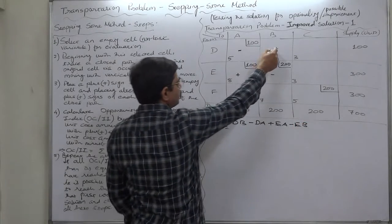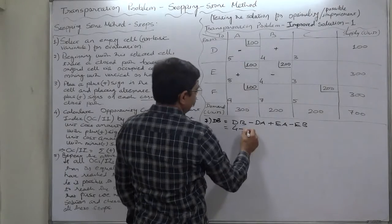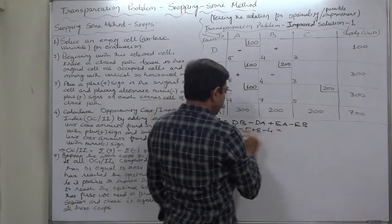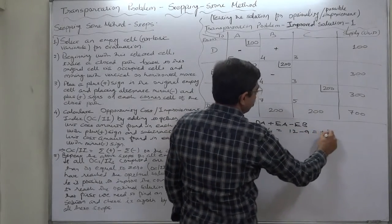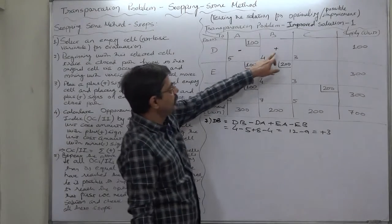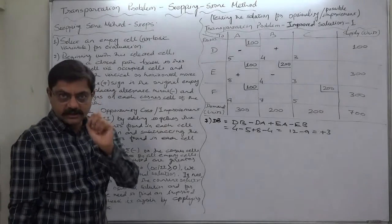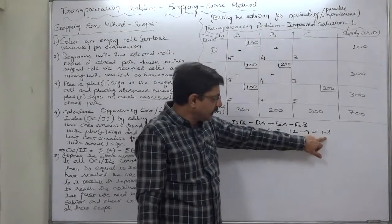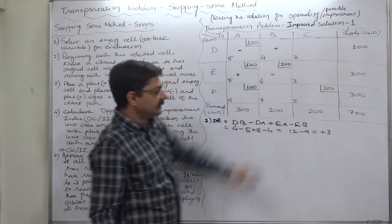The formula is: DB positive (starting point) minus DA, plus EA, minus EB. Substituting the unit costs: 4 minus 5 plus 8 minus 4, giving 12 minus 9 — that is positive 3. The interpretation: if we transport or allocate one unit to this cell, the total cost will increase by rupees 3 per unit. Positive means increase.